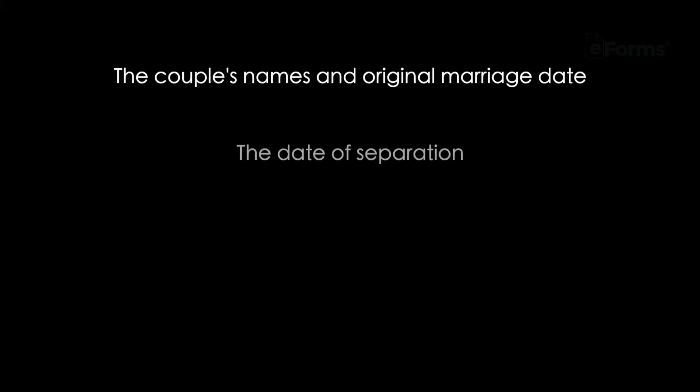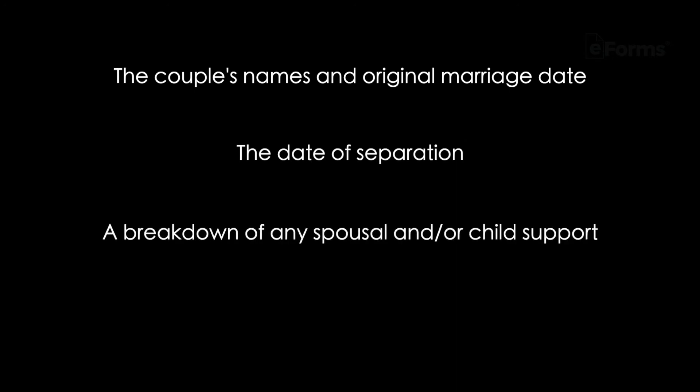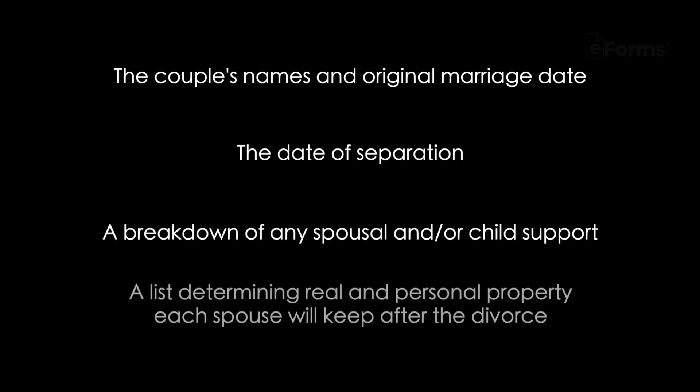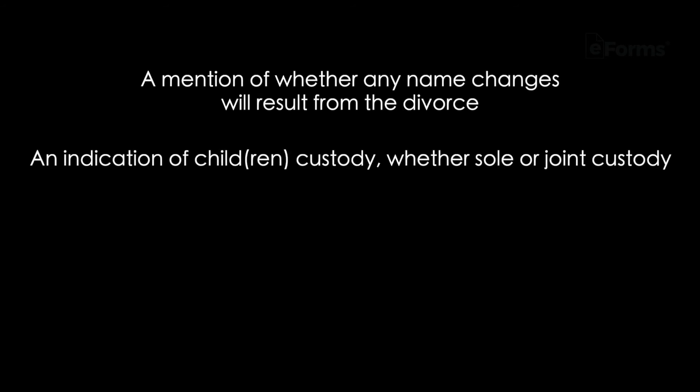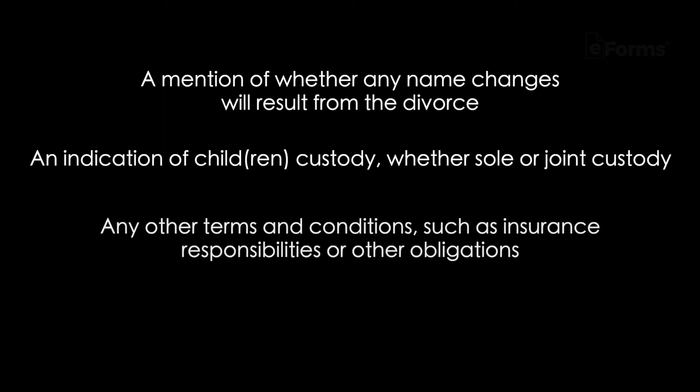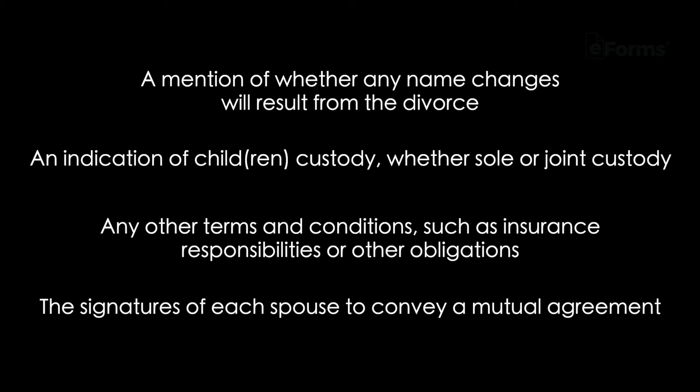The couple's names and original marriage date. The date of separation. A breakdown of any spousal and/or child support. A list determining real and personal property each spouse will keep after the divorce. A mention of whether any name changes will result from the divorce. An indication of children or child custody, whether sole or joint custody. Any other terms and conditions such as insurance responsibilities and other obligations. And the signatures of each spouse to convey a mutual agreement.